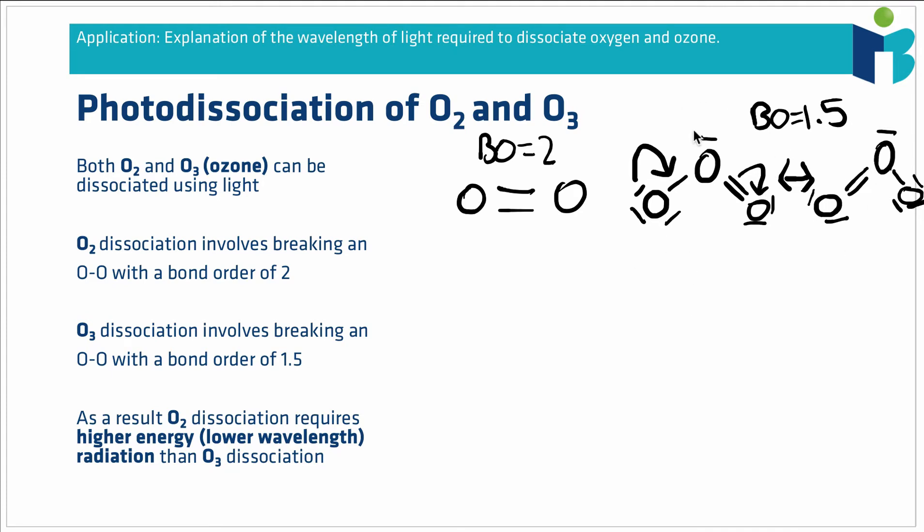Both of these molecules are able to undergo what's called photodissociation. That means if they're hit with the right frequency of light we can break the bonds, splitting these molecules into smaller atoms or molecules. We would write O2 interacts with light of a specific frequency, indicated using h and then the Greek symbol nu which looks like a v.